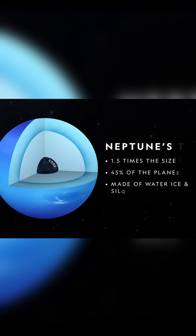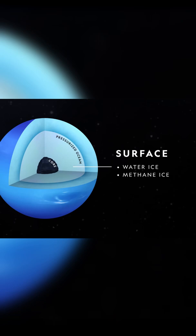The rest of the planet is believed to be a hot pressurized ocean of water, methane and ammonia ices surrounded by a layer of clouds.